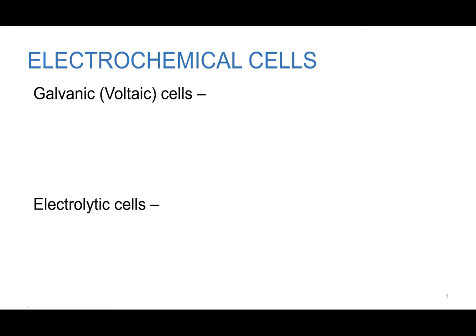That current we get from our spontaneous chemical reactions is utilized in one of the two electrochemical cells. The two types of electrochemical cells are called either galvanic or voltaic cells and electrolytic cells.